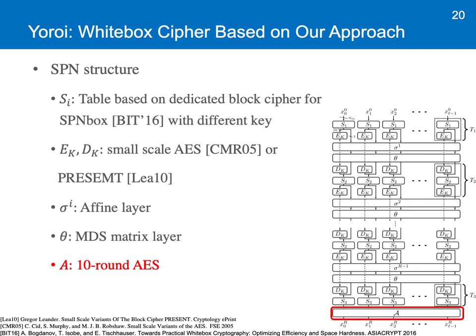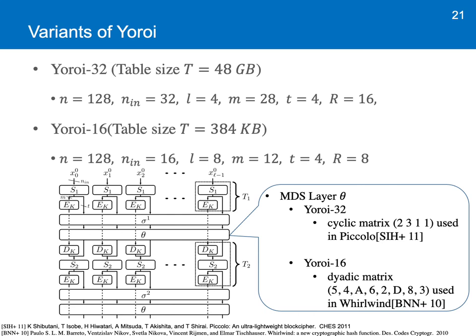Based on these elements, we constructed two variants, which are Yoroi32 and Yoroi16. They both take 128-bit data as input. When it comes to Yoroi32, each table takes 32-bit input, and the output of table lookup is split into two parts — one is 28 bits long and the other is 4 bits long. Total rounds for Yoroi32 is 16. And regarding the MDS layer, we used a cyclic matrix which is used in Piccolo.